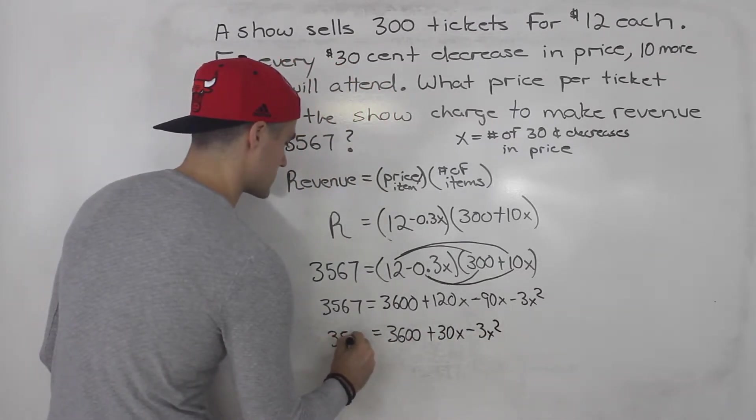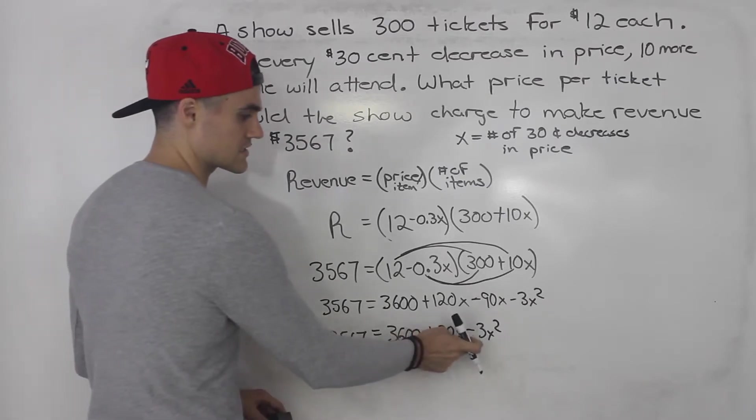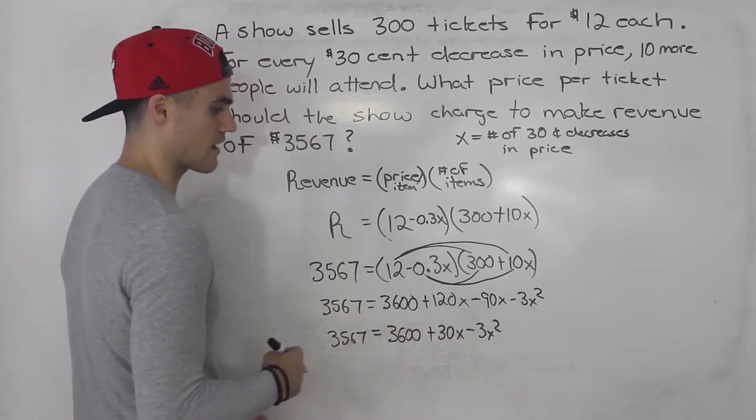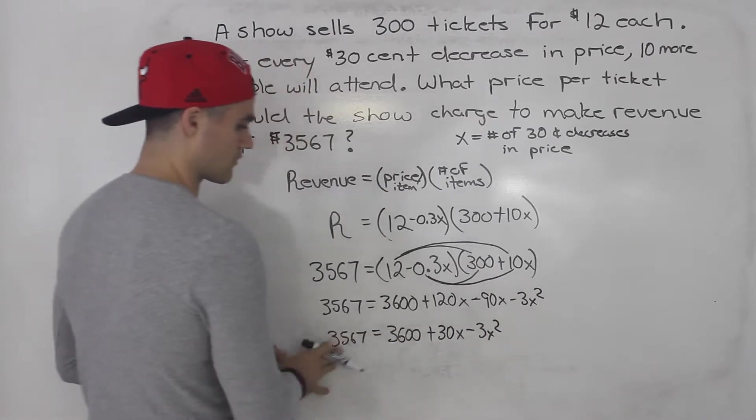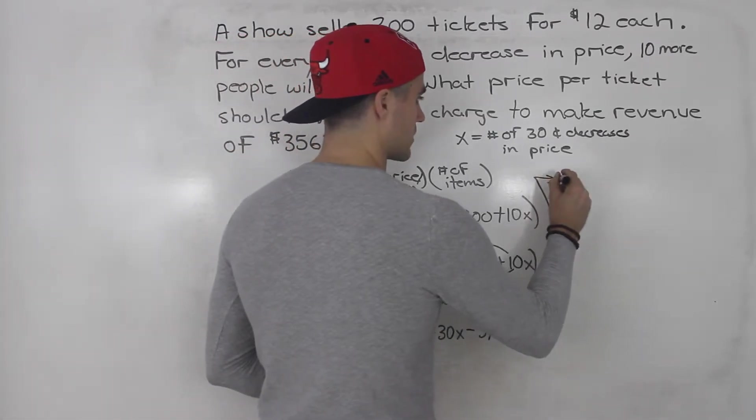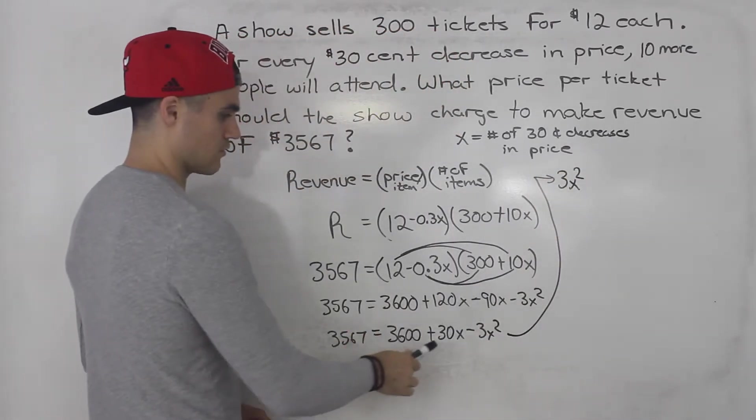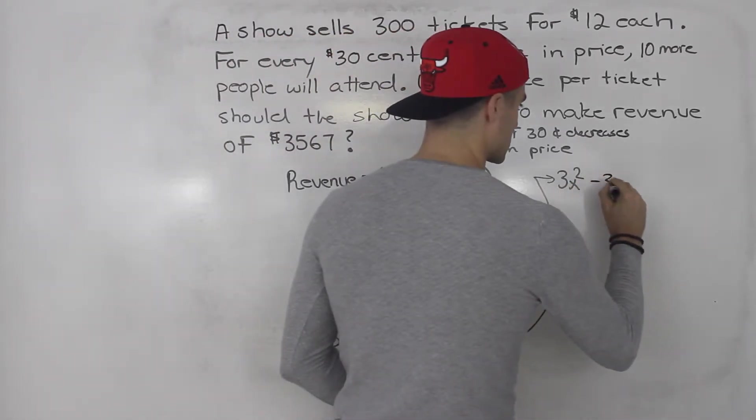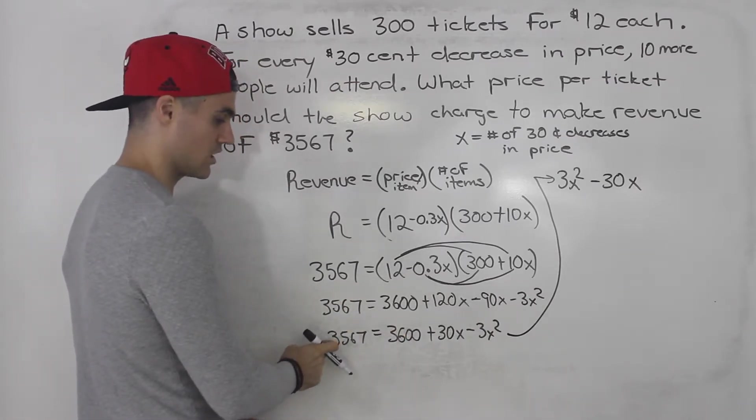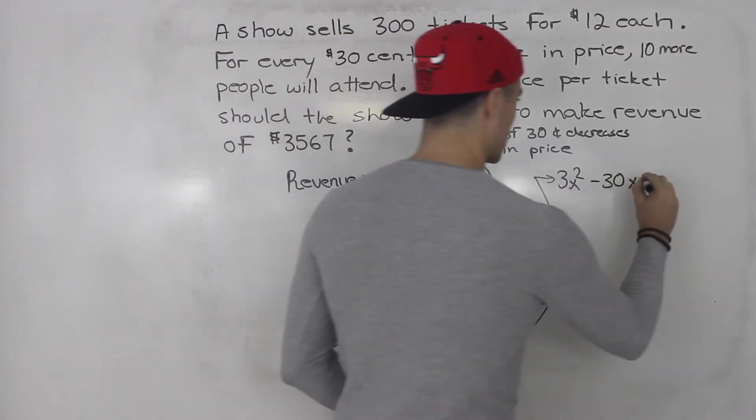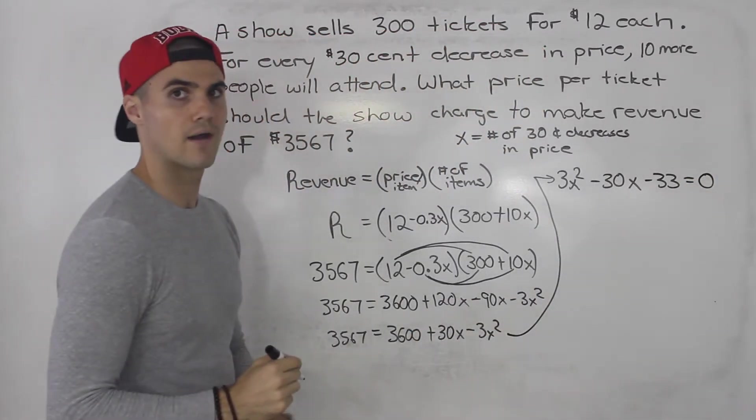And 3,567 is on the left side. So here we'll have 3,600. This would be 30x. This would be minus 3x squared. This 3,567 is still here. Let's actually bring everything over to the left side, just because this is a negative 3x squared and I always like to usually have the leading coefficient be positive. But either way works. So continuing this up here, this would be 3x squared positive. This 30x would come over, so that would be minus 30x. And then 3,567 minus 3,600 gives us negative 33, and that would equal zero.